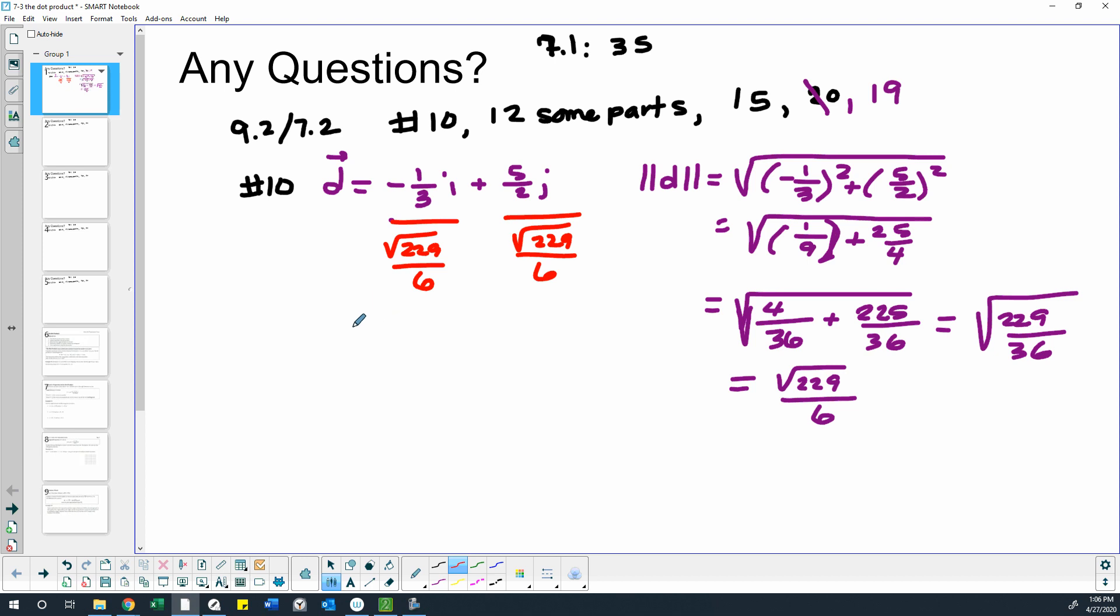So then I'm going to copy, dot, flip. So, one-third times 6 over square root of 229, and then I'm going to have five-halves times 6 over square root of 229. And that will reduce.